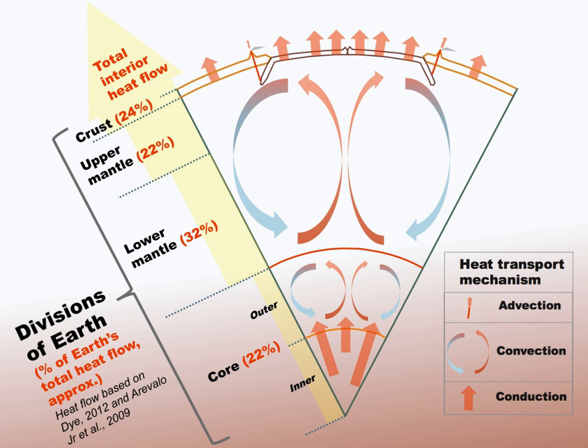In 1996, X. Song and P. Richards estimated this super rotation of the inner core relative to the mantle as about 1 degree per year.